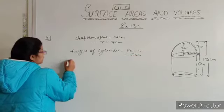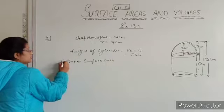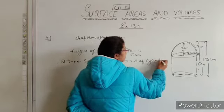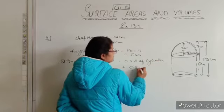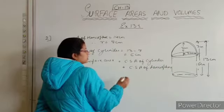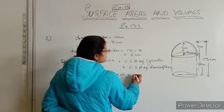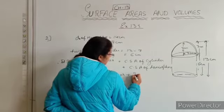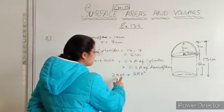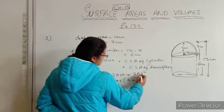Therefore, inner surface area equals curved surface area of cylinder plus curved surface area of hemisphere. That is 2πRH plus 2πR squared. The radius of the cylinder and hemisphere are the same, so we can take 2πR common. What is left inside is H plus R.